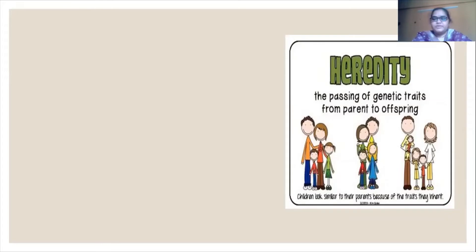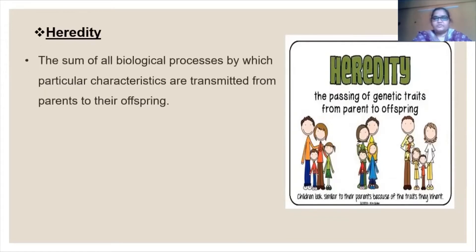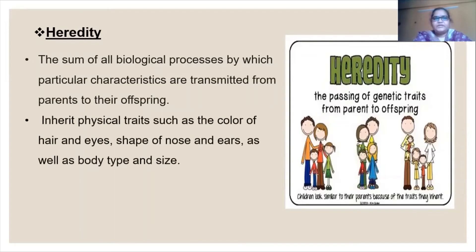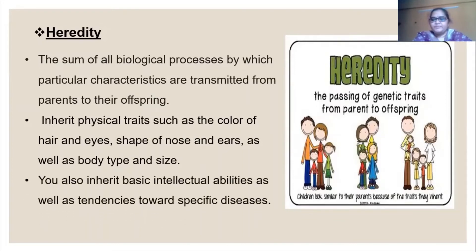First we talk about heredity. Heredity means the passing of genetic traits from parents to offspring — their habits, diseases, and body shape. These are the biological processes by which particular characteristics are transmitted from parents to their offspring. We inherit physical traits such as the color of hair and eyes, shape of the nose and ears, as well as body type and body size.